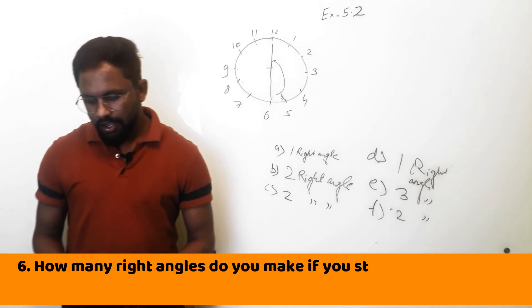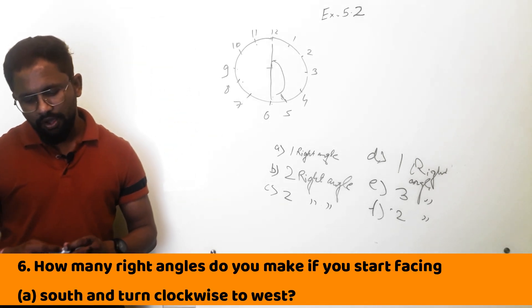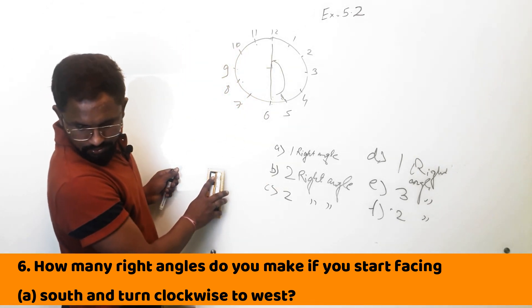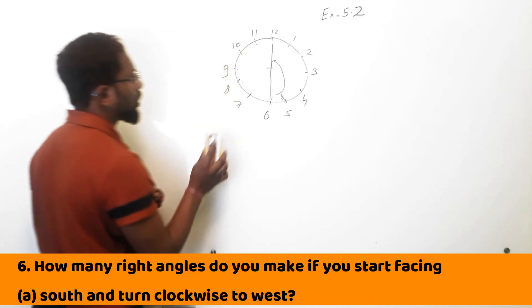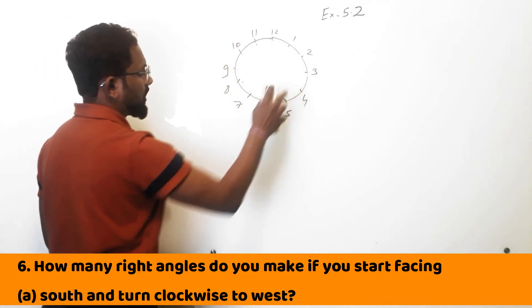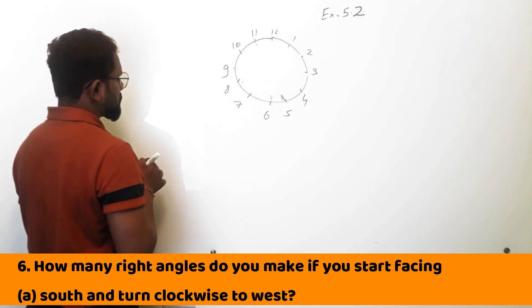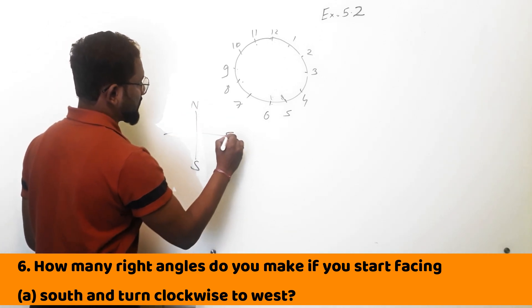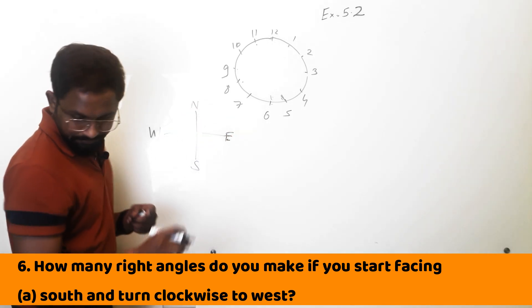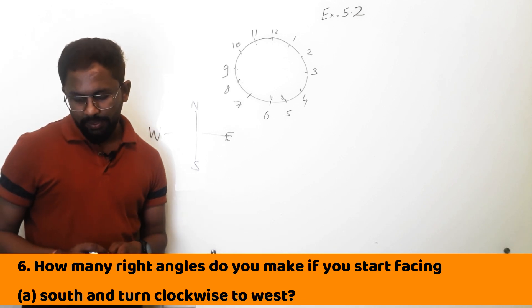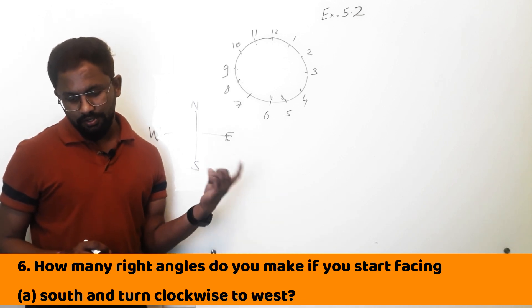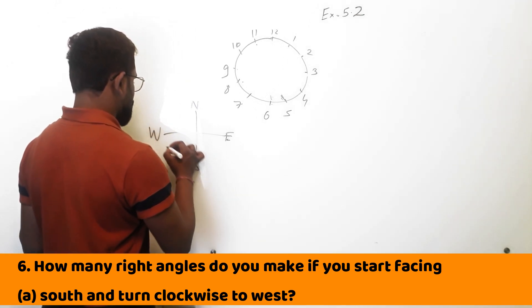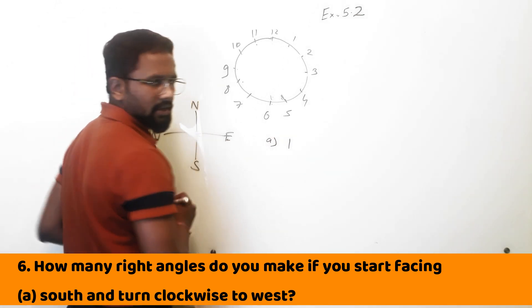Question 6: How many right angles will you make if you start facing certain directions? I will draw the direction signs — North, South, East, West. A part: you are at south and turn clockwise to west — this is 1 right angle.